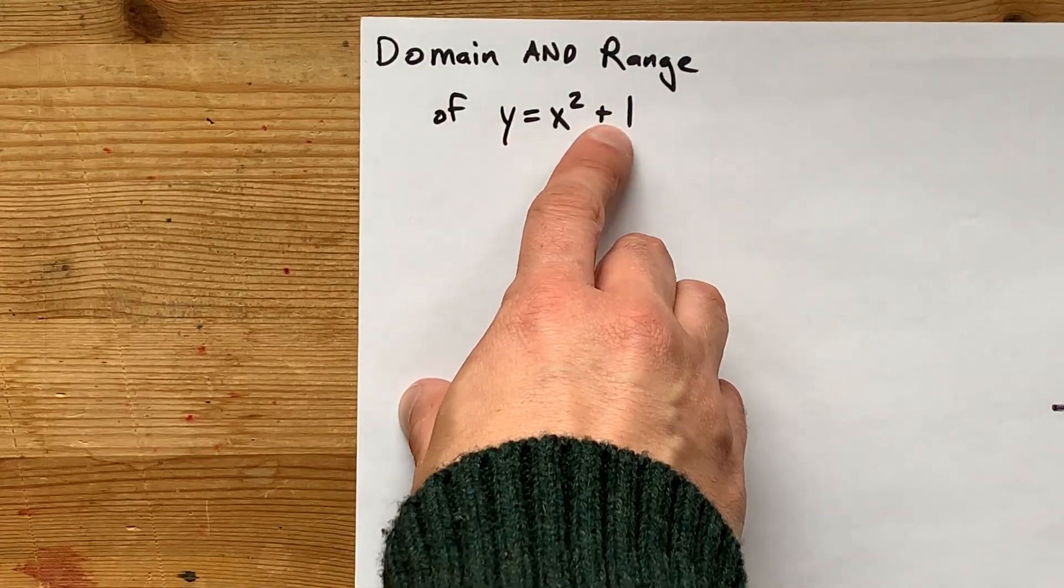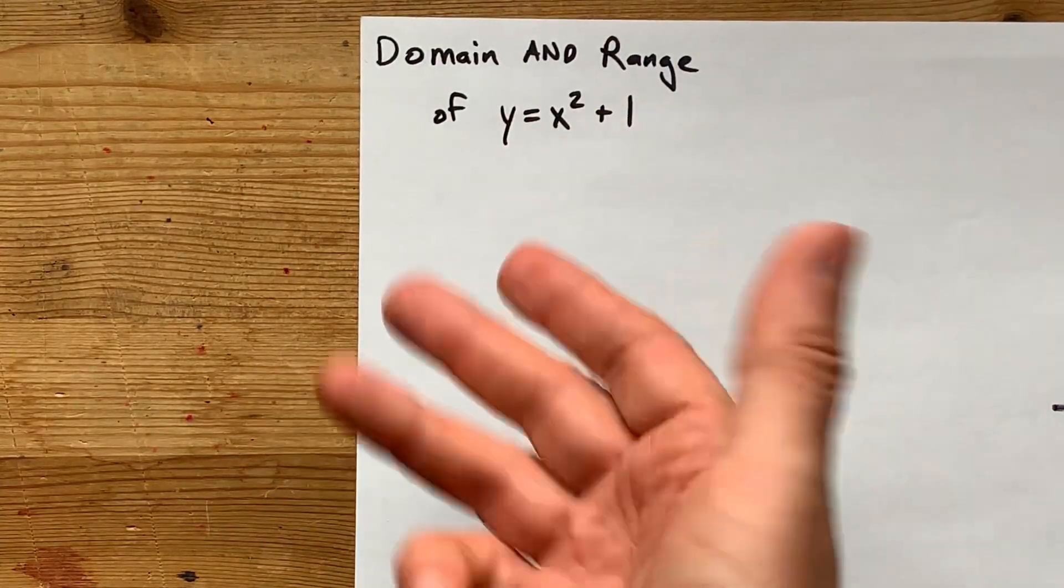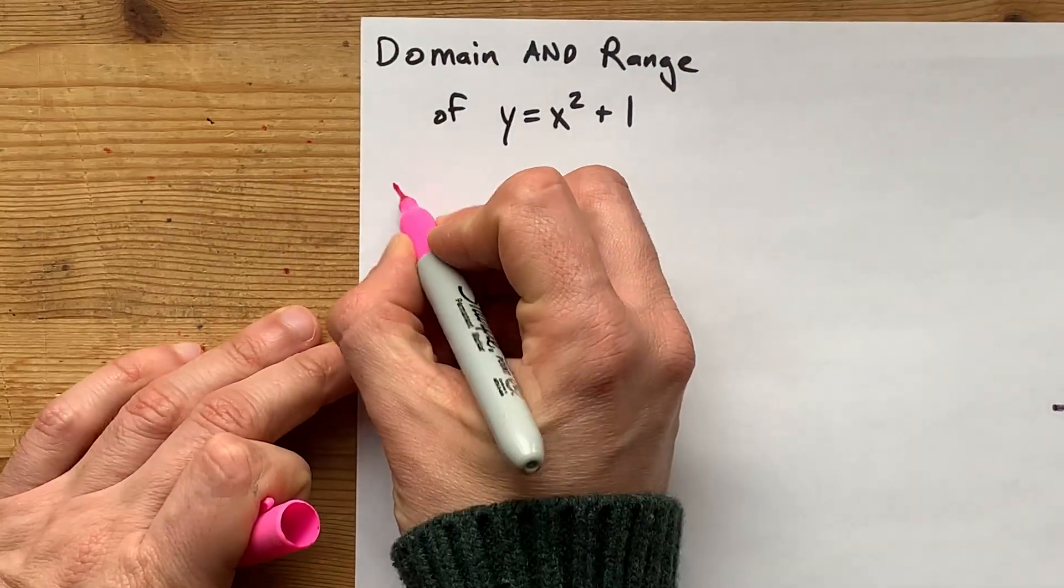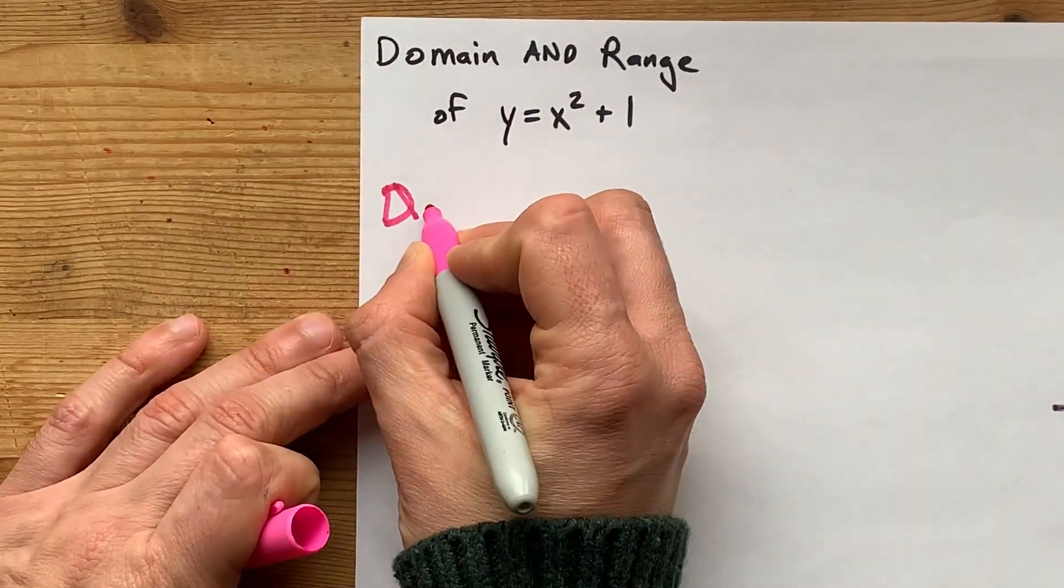And are there any numbers that you can't add 1 to? No, you can add 1 to literally anything. That means that there's no restrictions on what x can be.